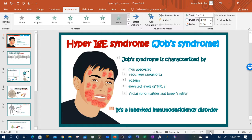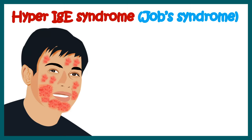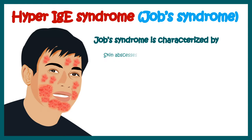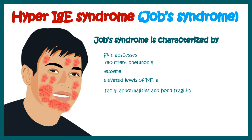Hello everyone. In this video we'll talk about Hyper IgE Syndrome, which is also known as Job Syndrome. This syndrome is characterized by skin abscess, recurrent pneumonia, eczema, elevated levels of plasma IgE antibodies, facial abnormalities, and fragile bone structure. These are the clinical features of Hyper IgE Syndrome.